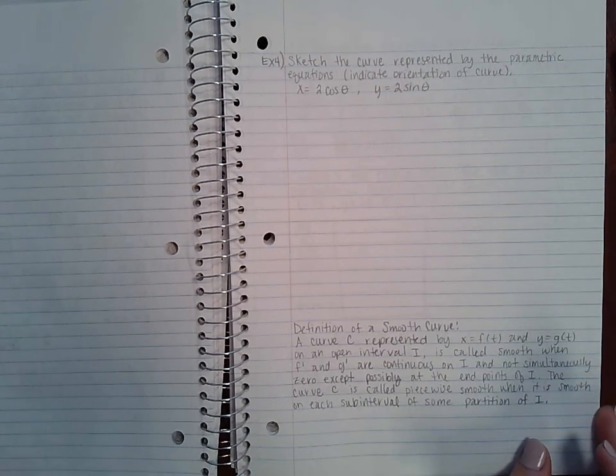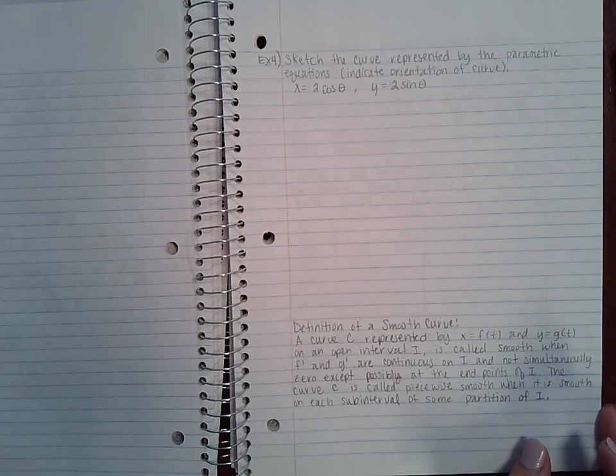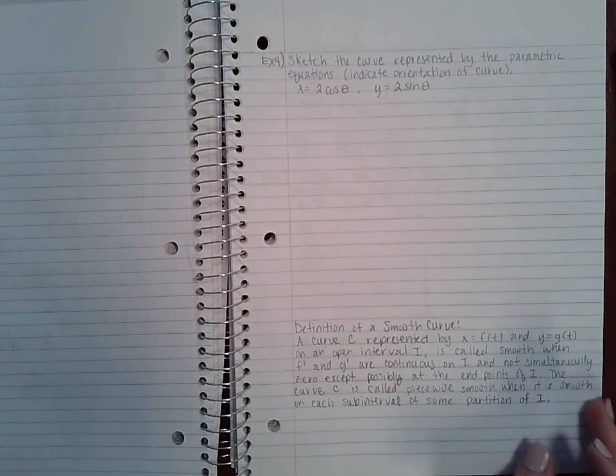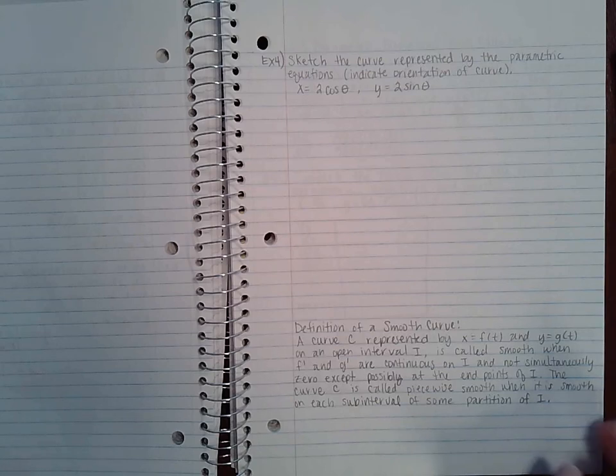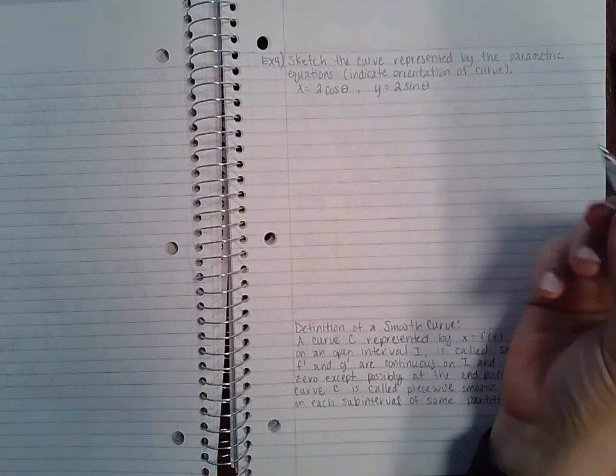So this problem is from 10.2 part three and it says sketch the curve represented by the parametric equations, indicate the orientation of the curve. So they don't want me to eliminate the parameter, they just want me to graph it.